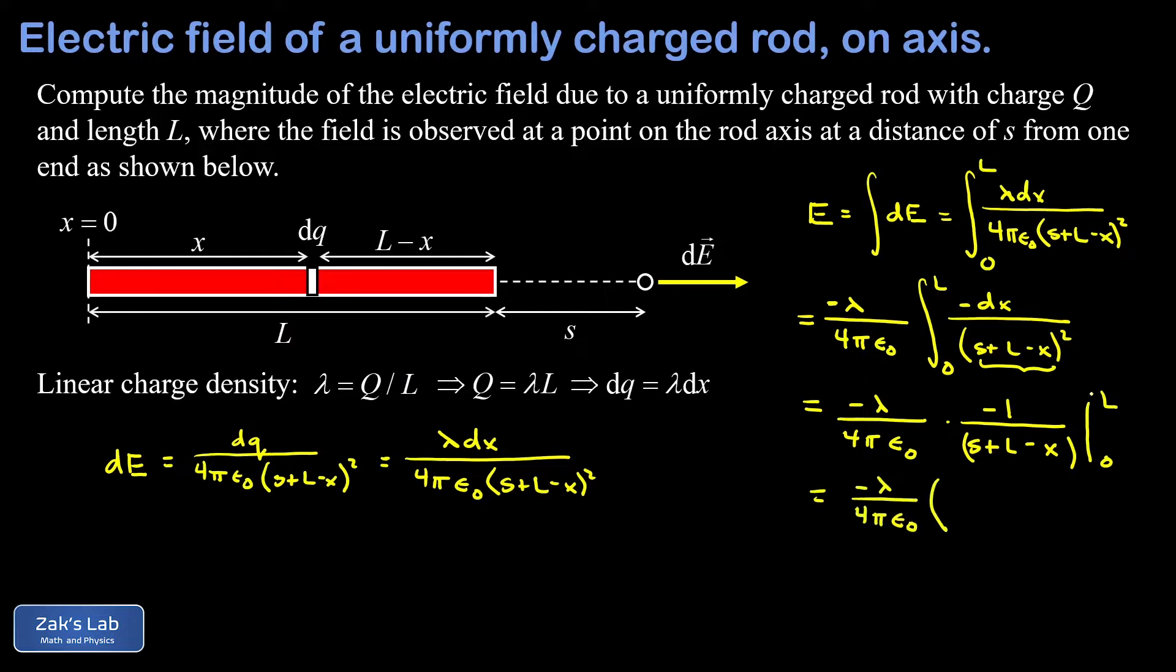So when I plug in the upper limit I replace x with capital L and that cancels the L that was already there and I end up with negative one over s. When I subtract the lower limit that cancels the minus sign and I end up with a positive contribution and when I replace x with zero I get an s plus L in the denominator so I have a plus one over s plus L.